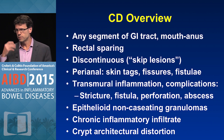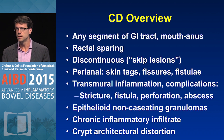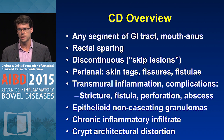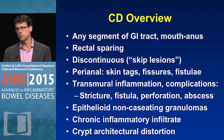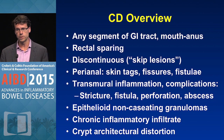In Crohn's, it can involve any segment of the GI tract from mouth to anus. It can spare the rectum. It can be discontinuous. It tends to involve the anus in a large percentage of cases with skin tags, fissures, or fistulae. One of the hallmark features is transmural inflammation with complications of stricture, perforation, fistula, and abscess.